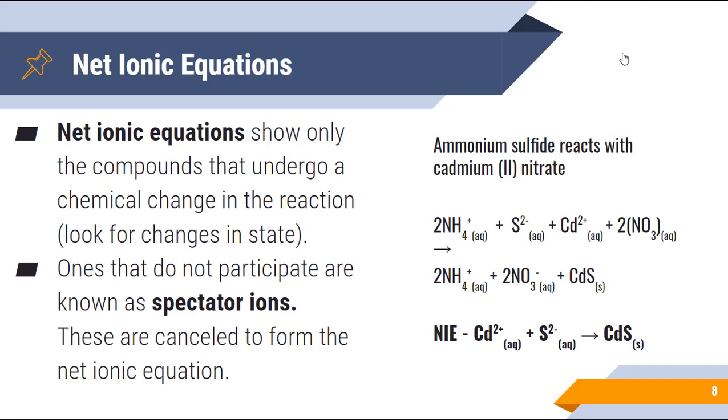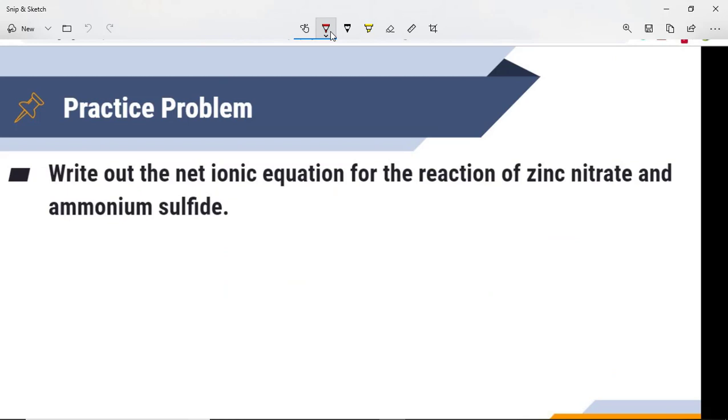The question asks us to write out the net ionic equation for the reaction of zinc nitrate and ammonium sulfide. The first thing we need to do is to write our reactants properly. We need to use proper nomenclature rules as we go through and do this. So zinc nitrate, Zn is +2, nitrate is -1, so Zn(NO3)2 plus ammonium sulfide.